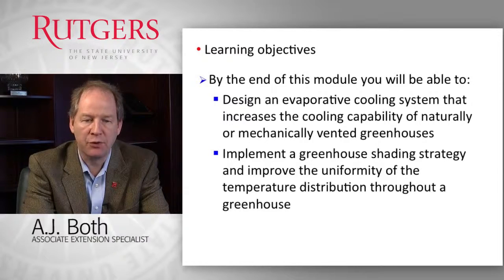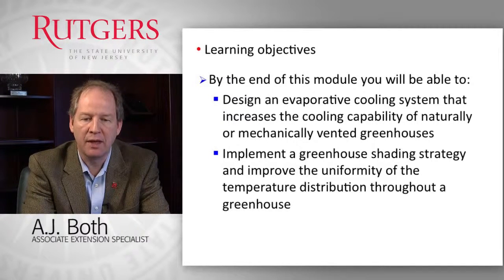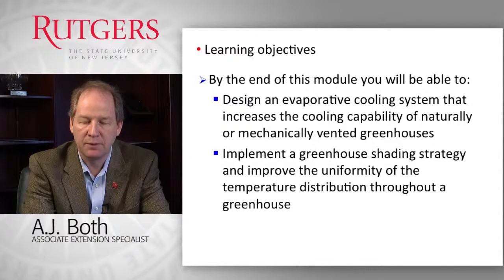The learning objectives for this module are that by the end of this module you should be able to design an evaporative cooling system that increases the cooling capacity of naturally and mechanically ventilated greenhouses, and that you should be able to implement a greenhouse shading strategy and improve the uniformity of the temperature distribution throughout the greenhouse.